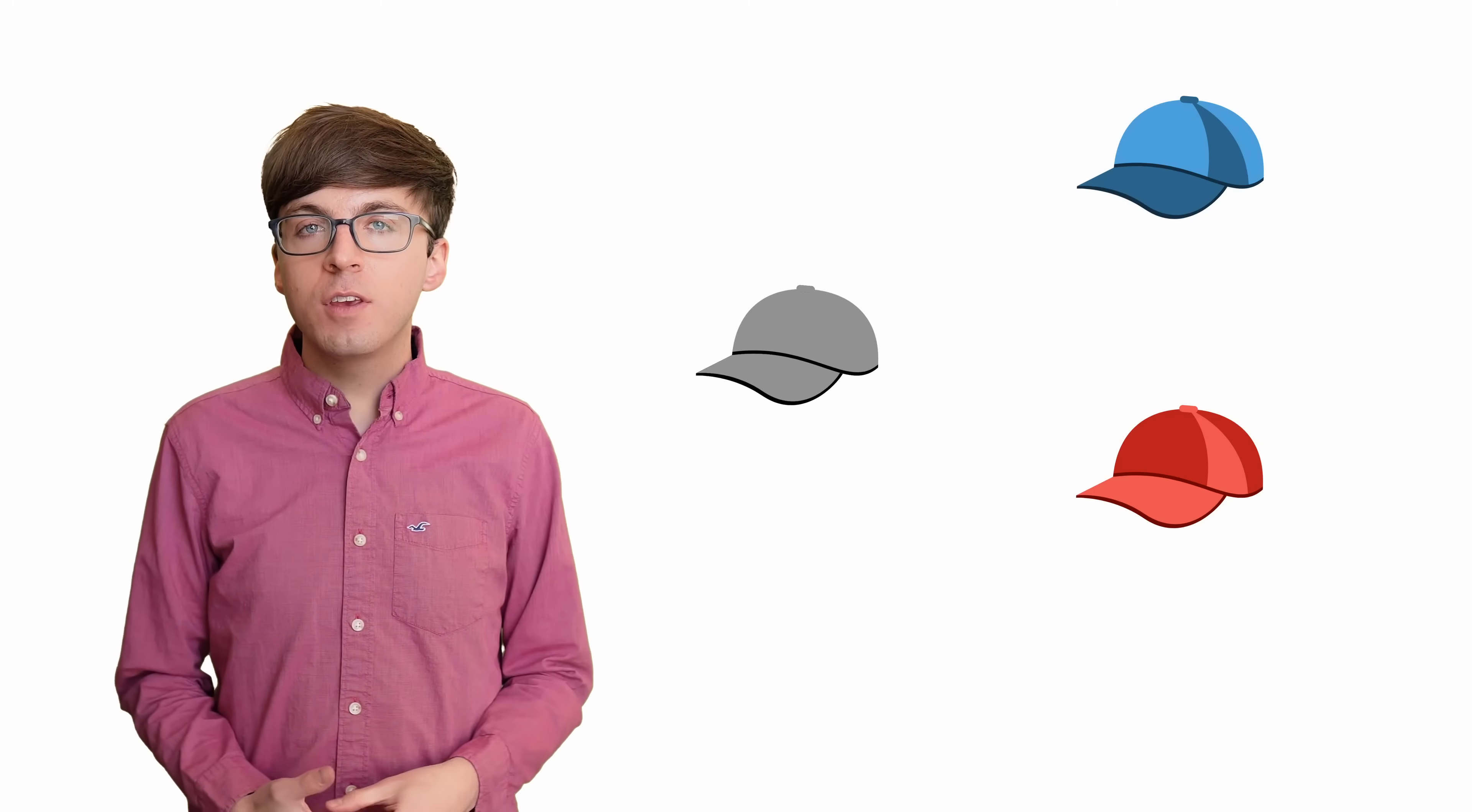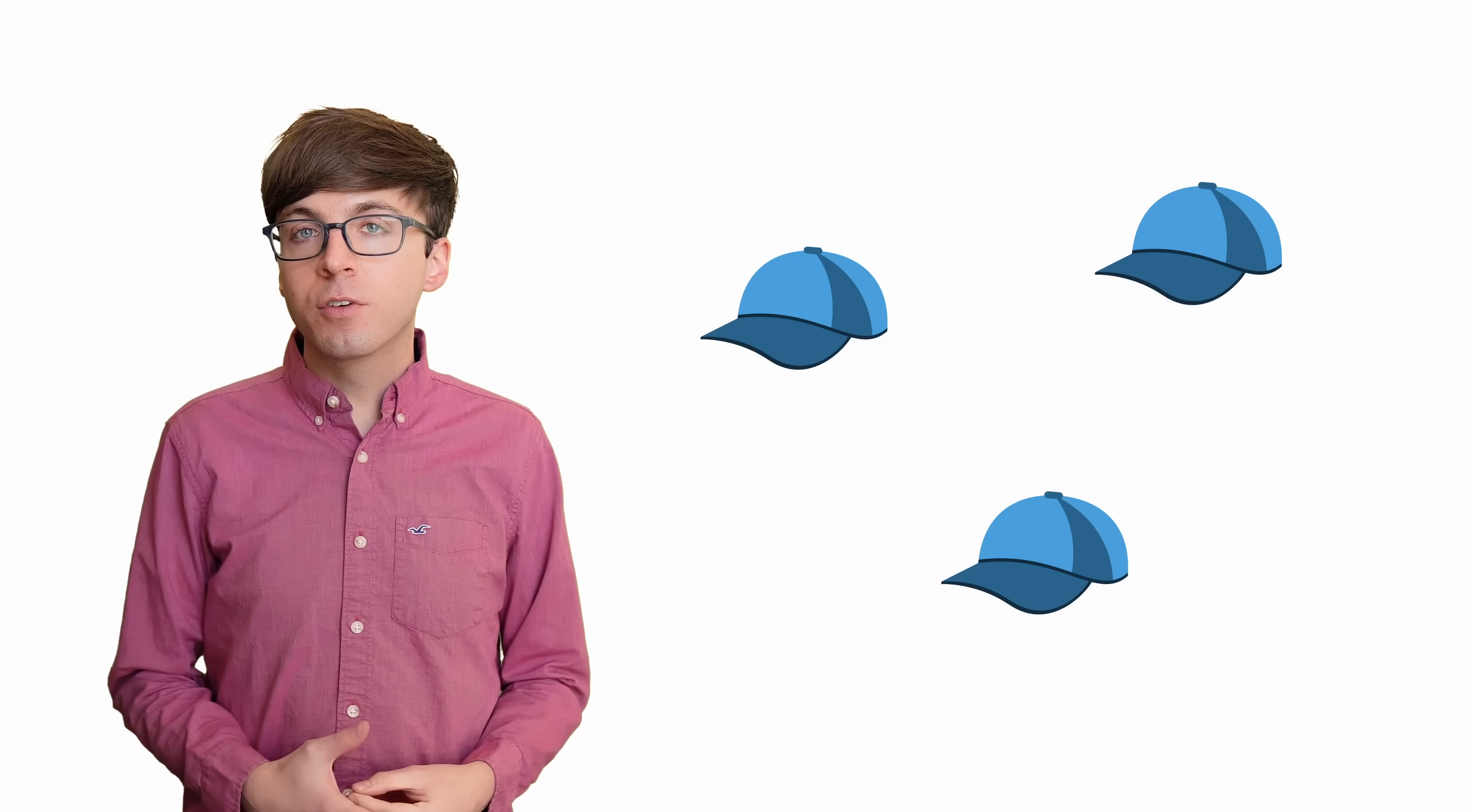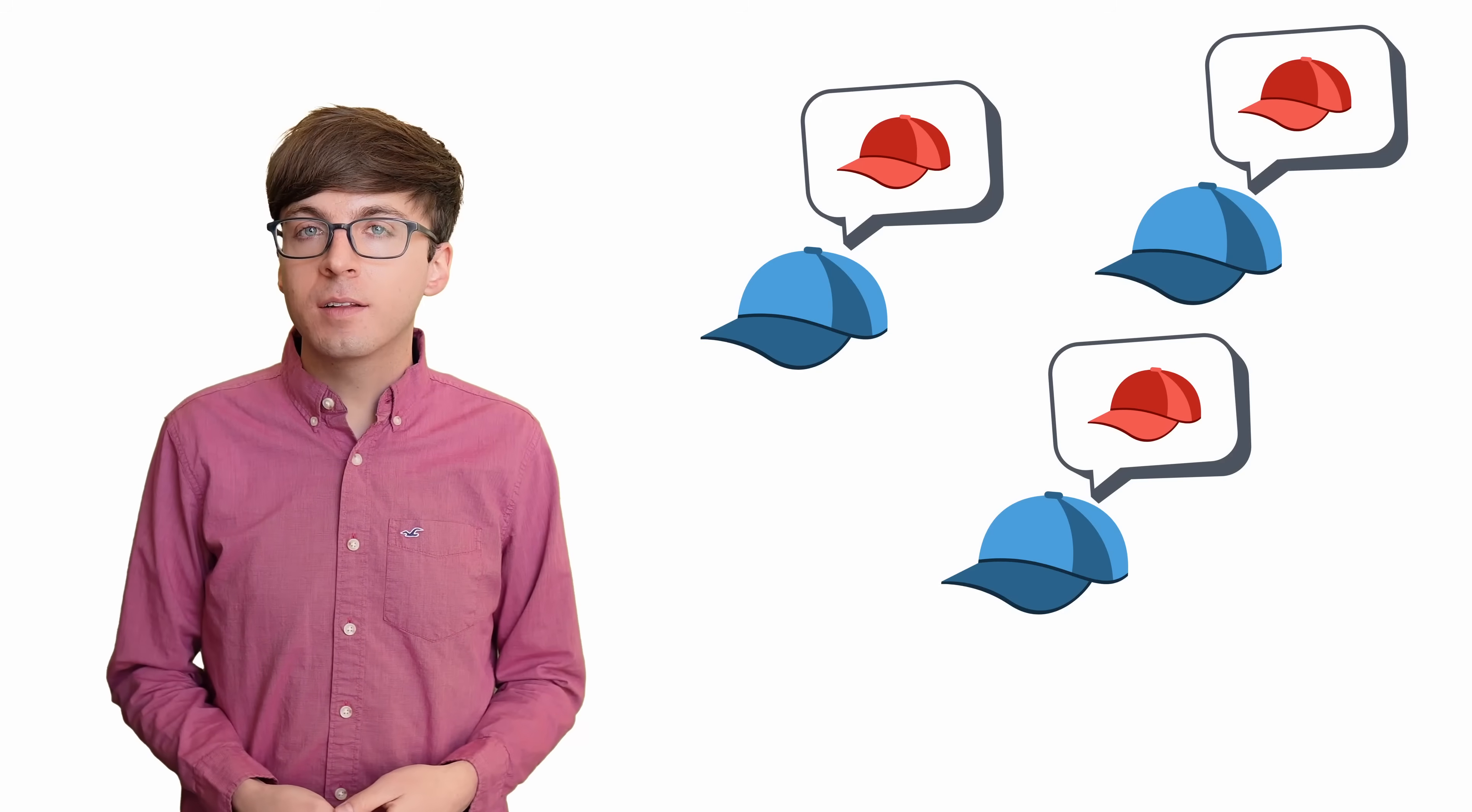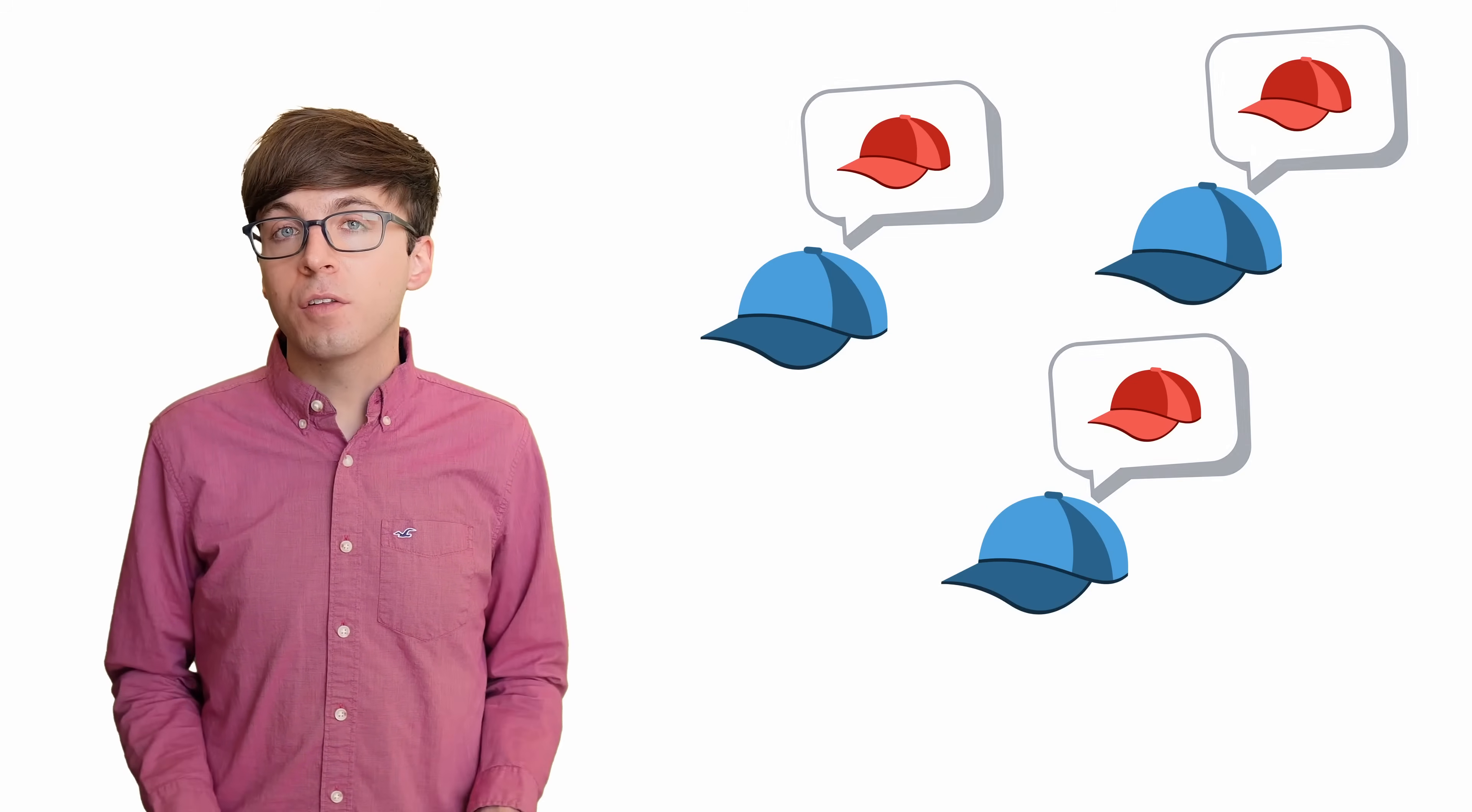With this strategy, what happens if all the hats are blue? Every prisoner sees two blue hats and guesses that their own hat is red. All three of them guessed incorrectly, and they lose the game. The same principle applies if all the hats are red.